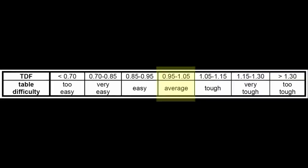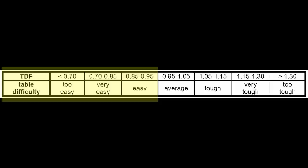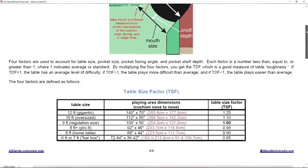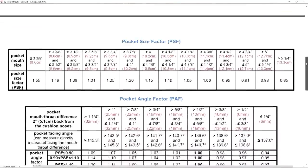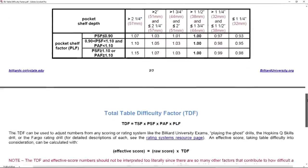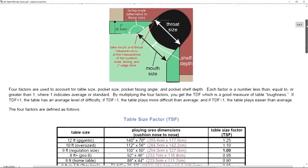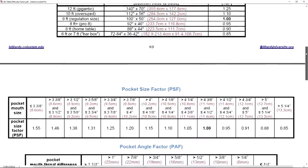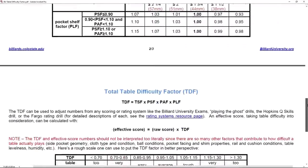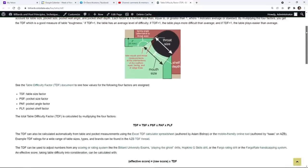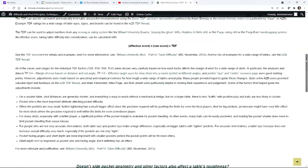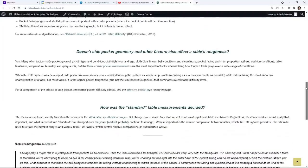If the TDF is close to 1, the table has an average level of difficulty. If the TDF is greater than 1, the table plays more difficult than average. And if the TDF is less than 1, the table plays easier than average. The value ranges used for the four factors are summarized in the TDF Factor document linked in the video description. All the numbers were chosen carefully based on how each factor affects the margin of error for a wide range of shots. If you want to learn about the rationale and logic used to determine the factor value ranges, see the TDF resource page linked in the video description.